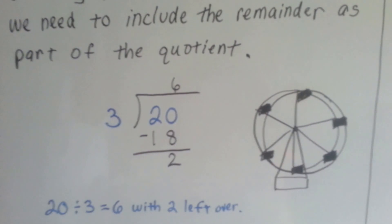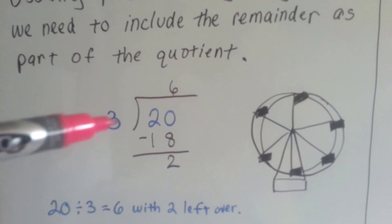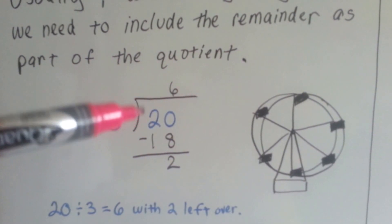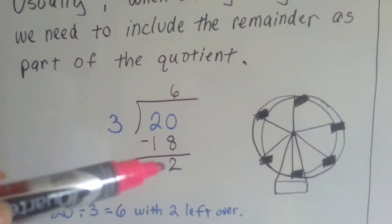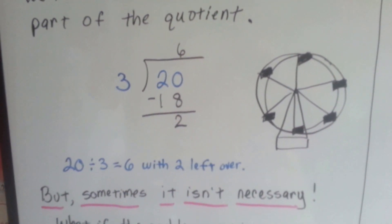20 divided by 3 is 6. 3 goes into 20, 6 times. 3 times 6 is 18. There's 2 left over. Our remainder is 2. Is this too important, though?